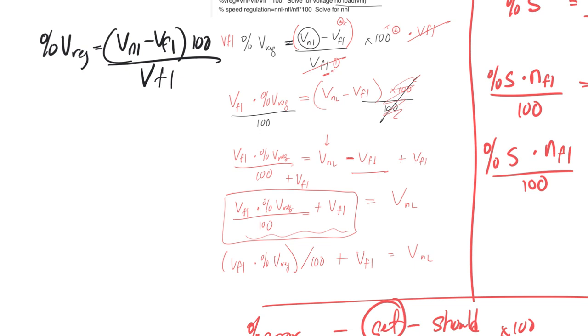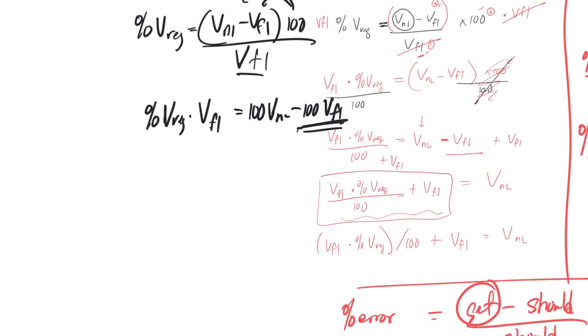Maybe I'd multiply the VFL on both sides. So percent Vreg times this one equals, and then you could multiply this 100 through to both of those. So 100 VNL minus 100 VFL, and then you'd add this on both sides. So I'm running out of room. So it'd be percent voltage reg times voltage this plus 100 voltage full is equal to 100 VNL. I should have been in the L there, and then divide everything by 100.